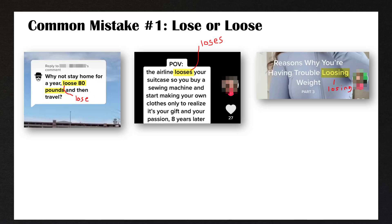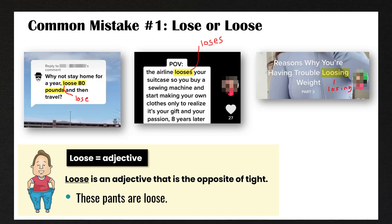So what is loose? Loose is an adjective that is the opposite of tight. For example, these pants are loose — they're not tight, they are loose.